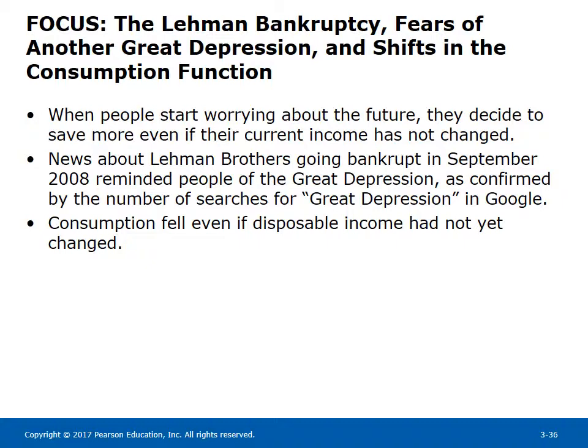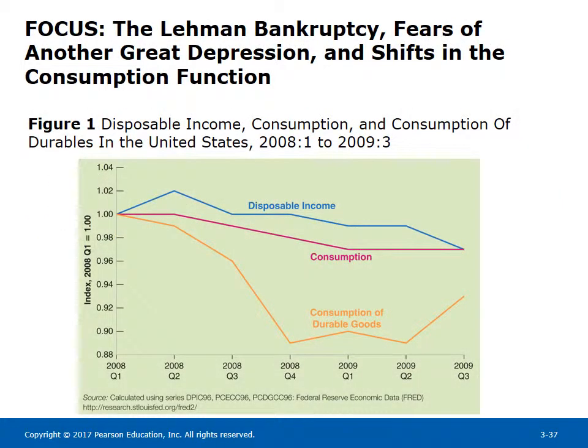The Lehman bankruptcy, fears of another Great Depression, and shifts in the consumption function. When people start worrying about the future, they decide to save more even if their current income has not changed. News about Lehman Brothers going bankrupt in September 2008 reminded people of the Great Depression, as confirmed by the number of searches for 'Great Depression' in Google. Consumption fell even if disposable income had not yet changed. This is represented in Figure 1, which shows the behavior of disposable income, consumption, and consumption of durable goods from 2008 Q1 to 2009 Q3.